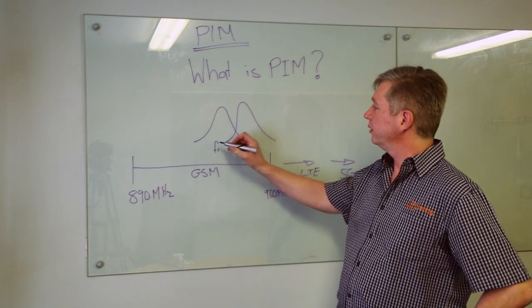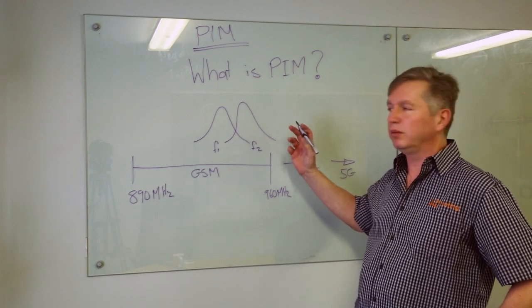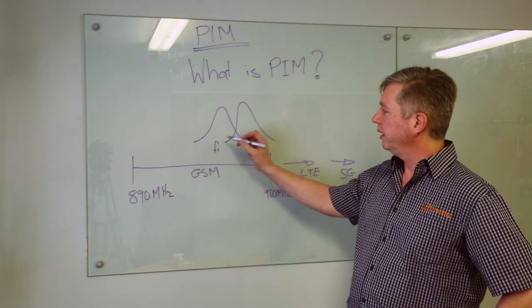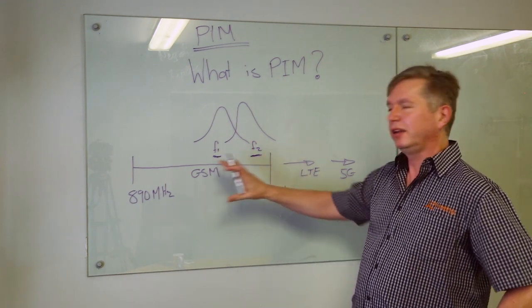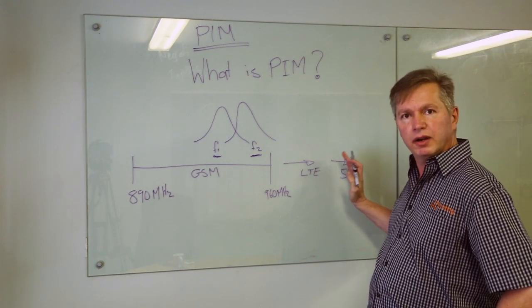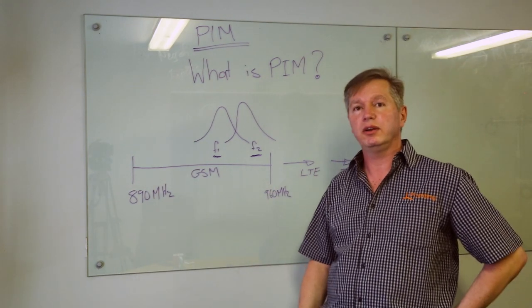PIM is effectively the product of two frequencies. In this example that I have over here, we have frequency one and we have frequency number two. This is just an example of GSM but it applies to LTE, 5G and various different technologies.